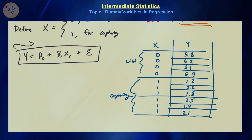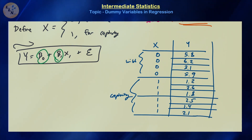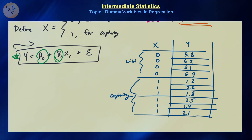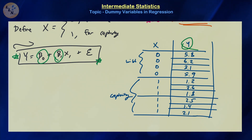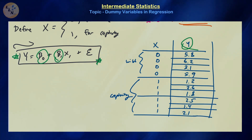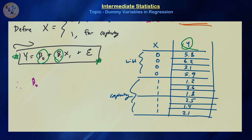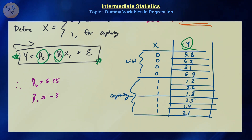Before proceeding, we assume all assumptions of the linear model are met: linearity of the means, homoscedasticity, and independence of responses. You should use your typical model diagnostic tests — for example, examining standardized residual plots. Assuming the linear model is appropriate, one can find that beta hat zero is approximately 5.25 and the slope beta hat one is approximately negative 3.32.